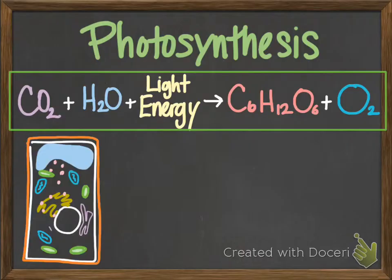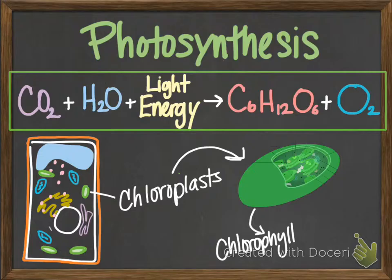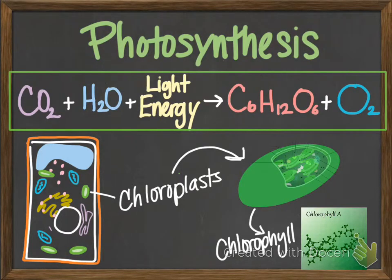Where does this process happen? In the cells of autotrophs, of course, but more specifically it happens in the chloroplasts. Chloroplasts look sort of like a green M&M, but when you break them open there are all sorts of other structures in there — and that's where the chemical processing occurs. The one ingredient we haven't talked about is a chemical that green plants, algae, and photosynthetic bacteria all possess: it's called chlorophyll. It's what makes them green; it's what makes the chloroplasts green.